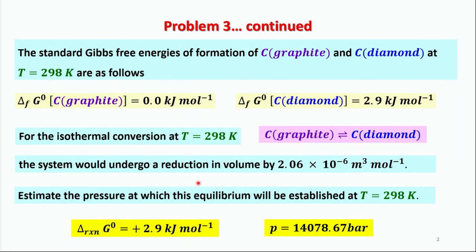We wanted to know what would be the pressure at which equilibrium will be established between graphite and diamond at 298 Kelvin. We found that under standard state conditions the ΔG°reaction — the standard Gibbs free energy — is a positive quantity. Therefore, at 298 Kelvin and one bar pressure, this is not a spontaneous reaction.